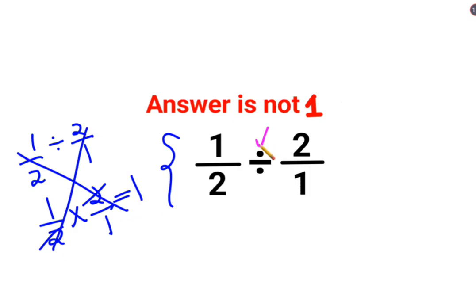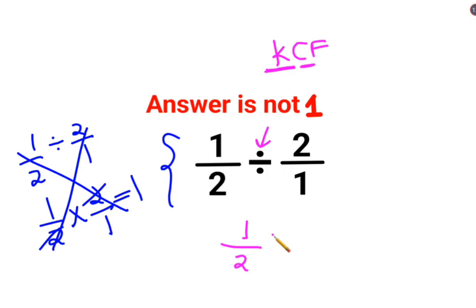Whenever there is a division sign involved, you have to follow the rule of KCF, where K stands for keeping the first number as it is — so half remains as half. C stands for changing the division sign to multiplication, and F stands for flipping, or taking the reciprocal, of 2 upon 1, which becomes 1 upon 2. So the answer for this one is 1 by 4.